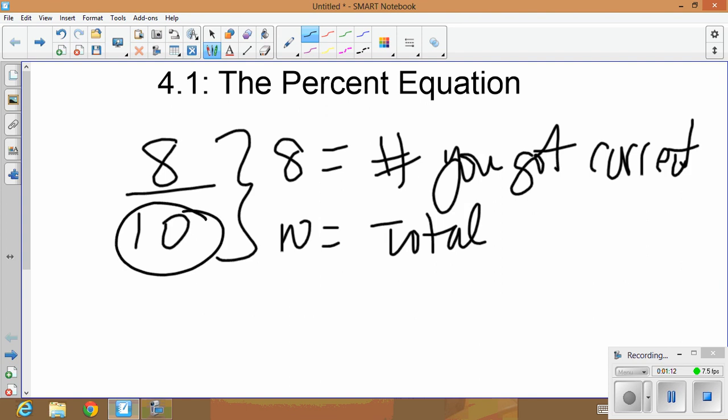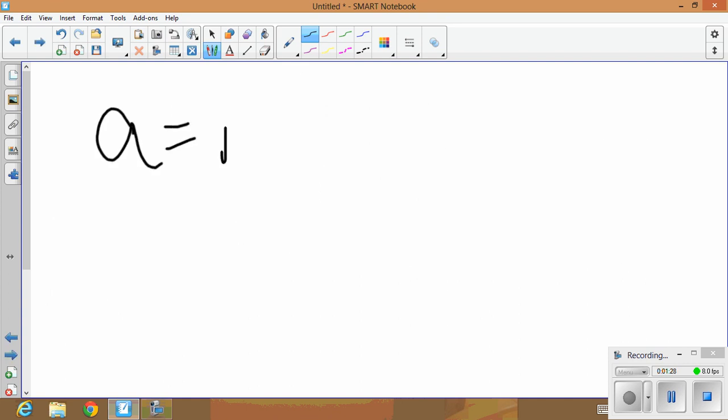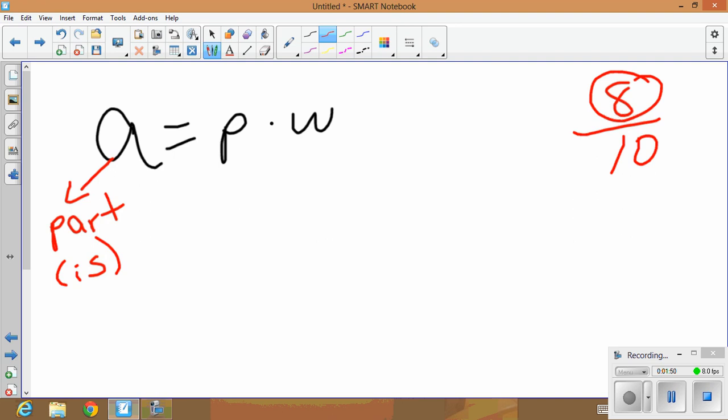And the 10 represents the total. So of 10 questions, 8 is the number that you got correct. So 'is' and 'of' are going to be two keywords that we're going to be paying attention to today. So here is our formula: a equals p times w. And I know right now it's not making any sense, but I'll explain each piece to you. a is called the part, and the keyword is 'is'. So if we take a look at 8 out of 10, the part would be 8. 8 is the number of questions you got correct out of 10. p is called your percent.